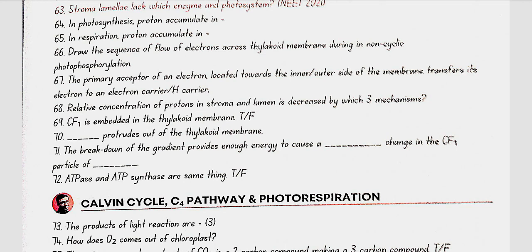The primary acceptor of an electron, located towards the outer side of the membrane, transfers its electron to a hydrogen carrier. The relative concentration of protons in the stroma versus lumen is decreased by three mechanisms: protons produced by splitting of water accumulate within the lumen; protons are transported across the membrane as electrons move through photosystems via the hydrogen carrier; and reduction of NADP+ to NADPH+H+ removes protons from the stroma.